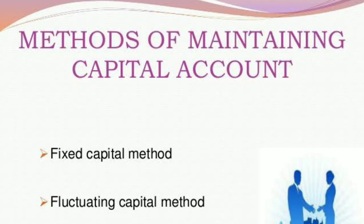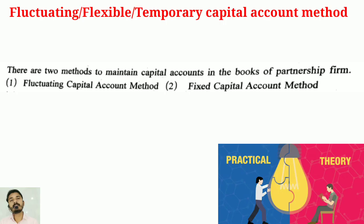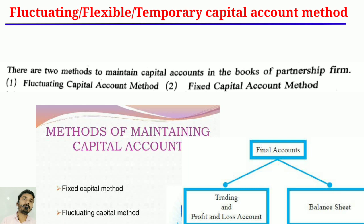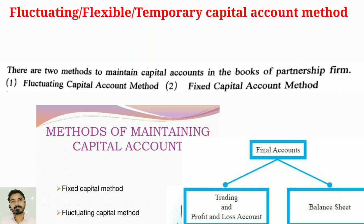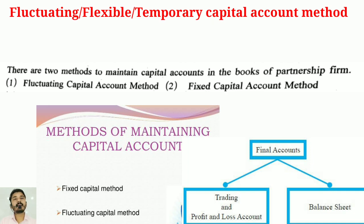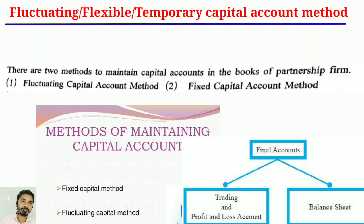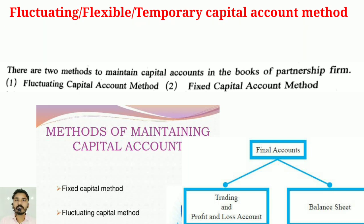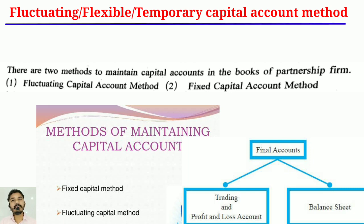There are two methods to maintain a capital account in the books of a partnership firm. The first method is the fluctuating capital account method, and the second is the fixed capital account method. In partnership firms, you have to use the capital account and profit and loss appropriation account — these two accounts are added. So these are the fluctuating capital and fixed capital account methods.